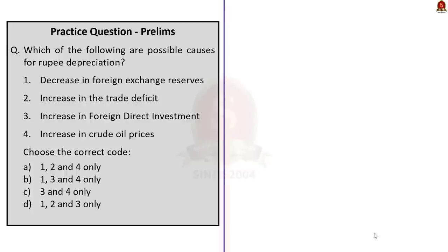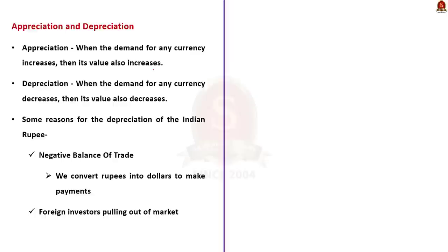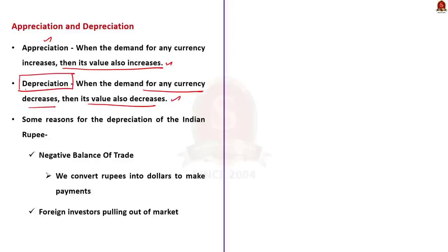This question is about rupee depreciation. Four statements are given and we have to find which of these statements are the possible causes of rupee depreciation. Before we approach this question, let us understand first about rupee depreciation. When the demand for any currency increases, then its value also increases — this is called appreciation. When the demand for any currency decreases, then its value also decreases — this is called depreciation. Now, we will see what are the reasons for the depreciation of the Indian rupee.